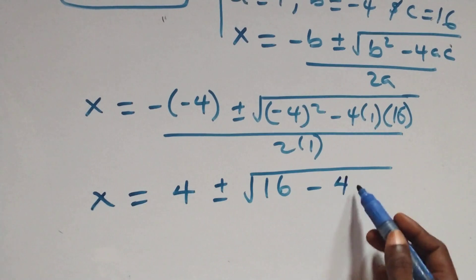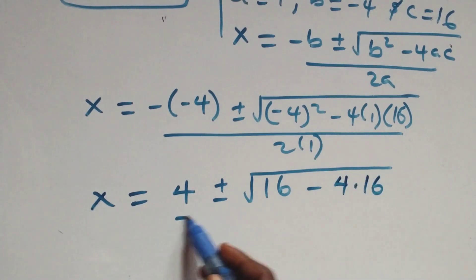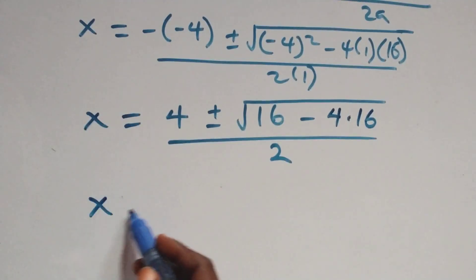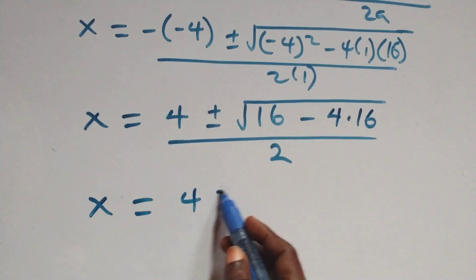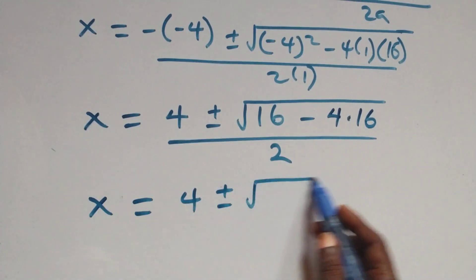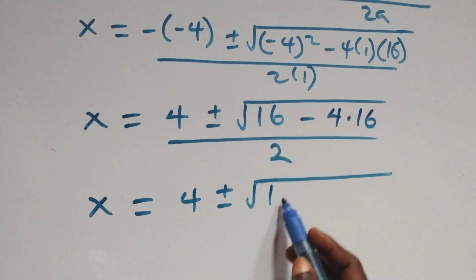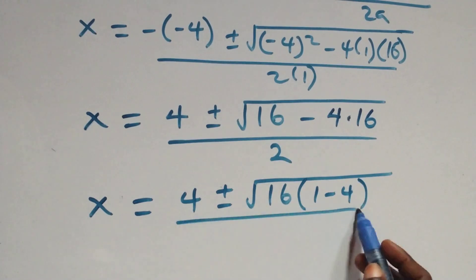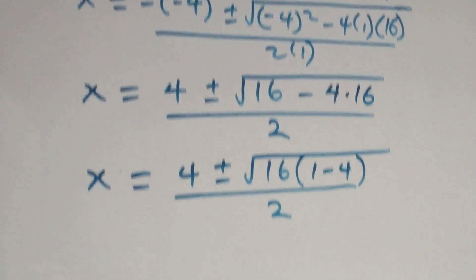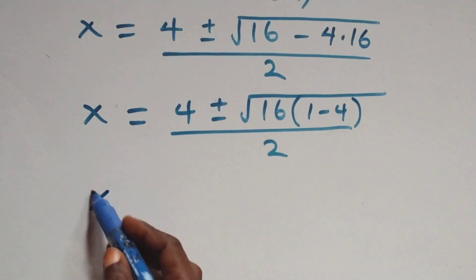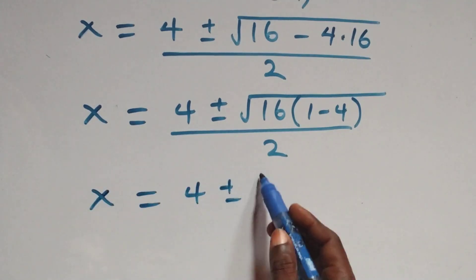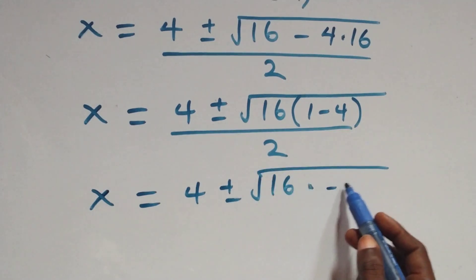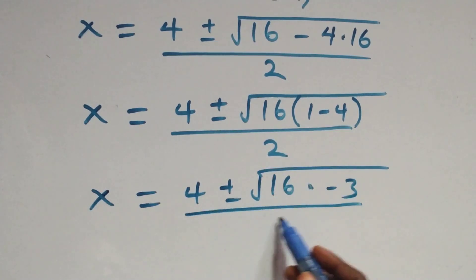We have x equals 4 plus or minus square root of 16 minus 64, all over 2. The value 16 is a common factor inside the root, so we factor to get x equals 4 plus or minus square root of 16 times 1 minus 4, which gives 16 times negative 3, over 2.